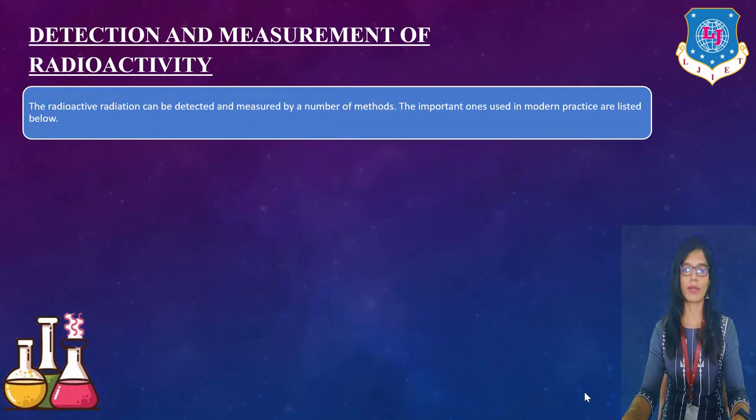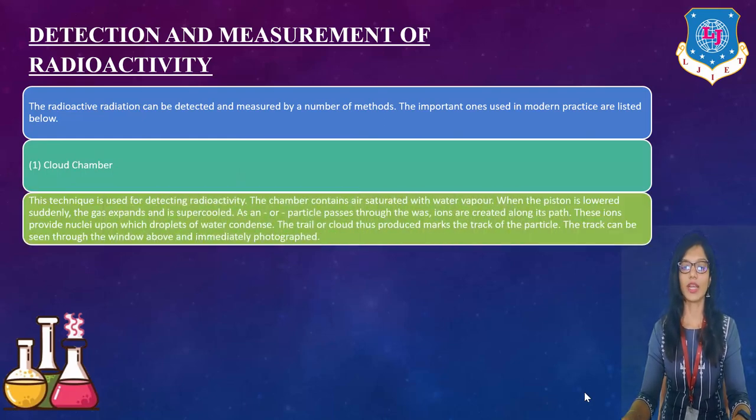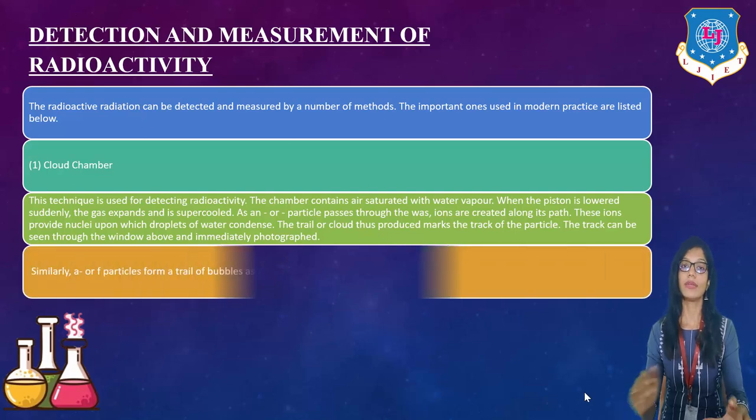The important ones used in modern practice are listed below. First one is cloud chamber. So this technique is used for detecting radioactivity. The chamber contains air saturated with water vapor. When the piston is lowered suddenly, the gas expands and is supercooled. As an alpha or beta particle passes through it, the ions are created along its path. And this ions provide nuclei upon which droplets of water condense. Now the trail or cloud this produce marks of the trek of the particle and the trek can be seen through the window above and immediately photographed.